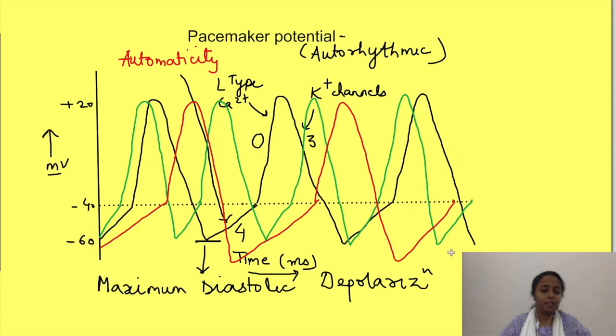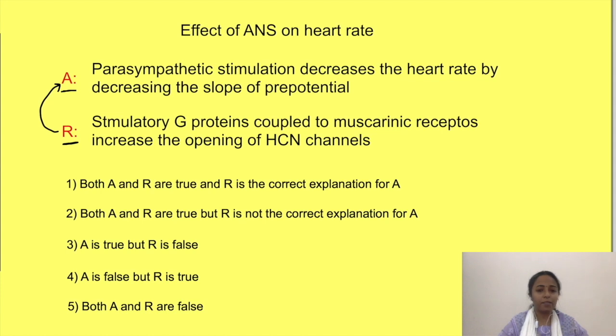So with this, let us now come back to our original question. Assertion says parasympathetic stimulation decreases the heart rate by decreasing the slope of the pre-potential. Yes, this is a correct statement, right? Reason statement says stimulatory G proteins coupled to muscarinic receptors increase the opening of HCN channels. Well, this is a wrong statement since muscarinic receptors are associated with inhibitory G proteins which decrease the opening of HCN channels.